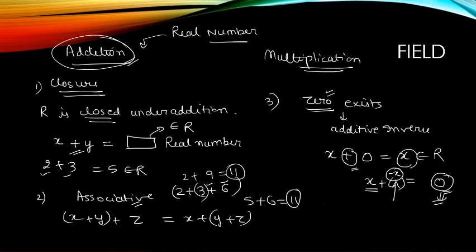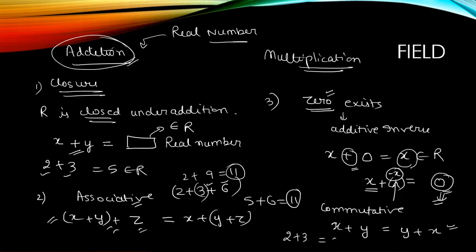Addition is also commutative. In commutativity we have only two numbers: when you do x plus y or change its order to y plus x, that doesn't make a difference — both are the same. So 2 plus 3 equals 3 plus 2, and they all belong to real numbers. These are the properties of addition.